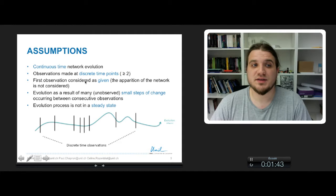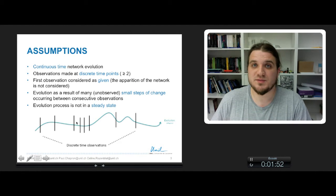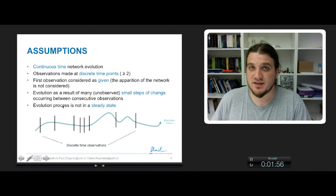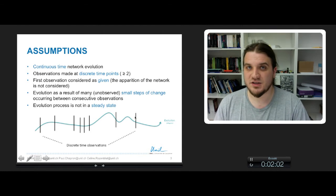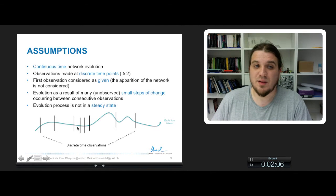Another assumption is that the evolution of the network is the result of many small steps of change that occurs between the time observations. And finally, the evolution process is not a steady state. It means that the evolution is not monotonic, it has some variation. Sometimes these variations are sampled by the observations, but sometimes some variations are not captured by your observations.